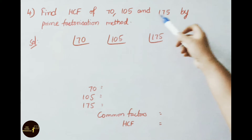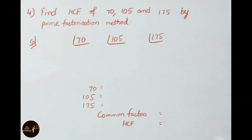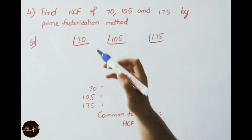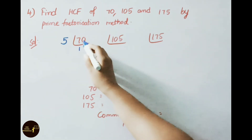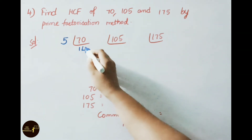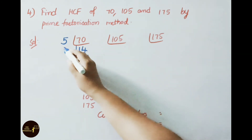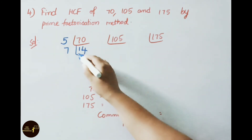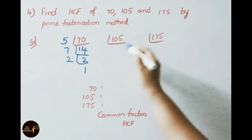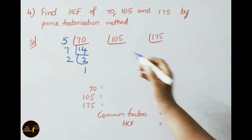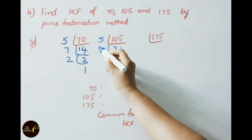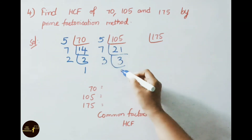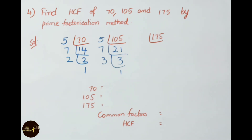The fourth sum: Find the HCF of 70, 105, and 175 by the prime factorization method. For 70: dividing by 5 gives 14, then 14 divided by 7 gives 2. So 70 = 5 × 7 × 2. For 105: 105 divided by 5 gives 21, then 21 divided by 7 gives 3. So 105 = 5 × 7 × 3. For 175: 175 divided by 5 gives 35, then 35 divided by 5 gives 7. So 175 = 5 × 5 × 7.